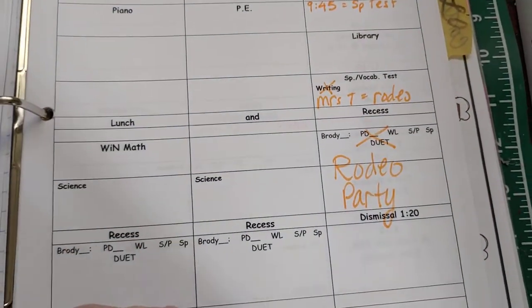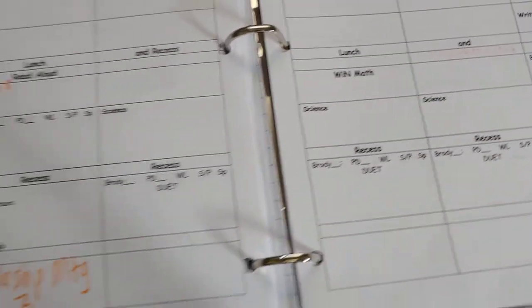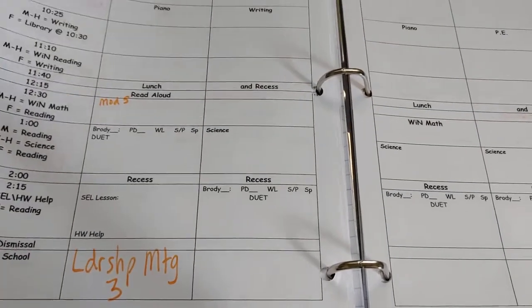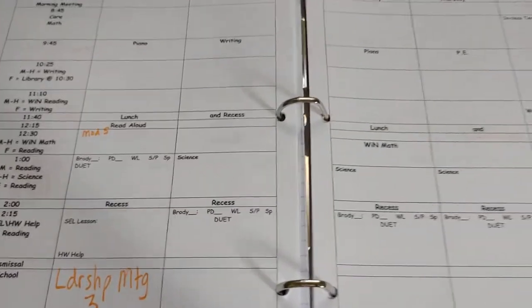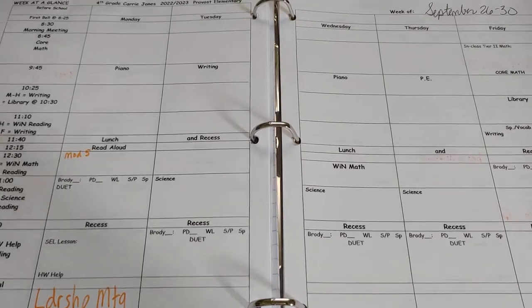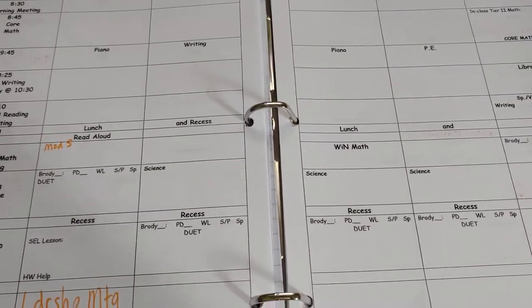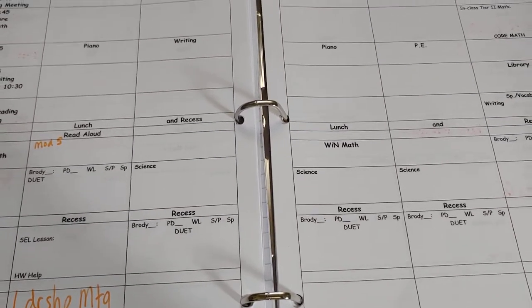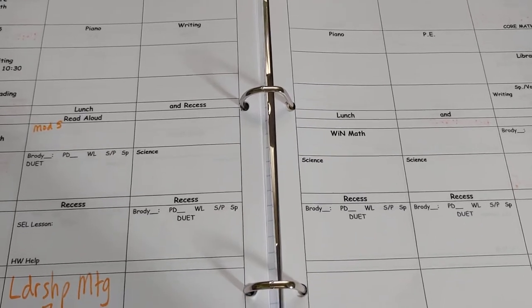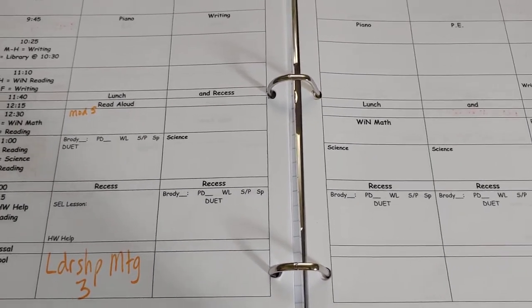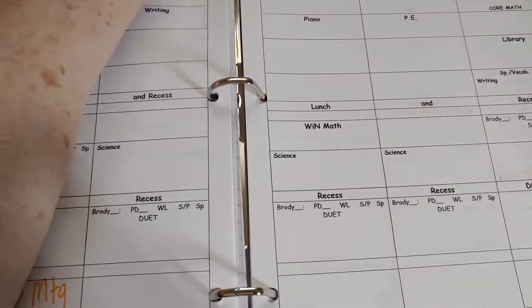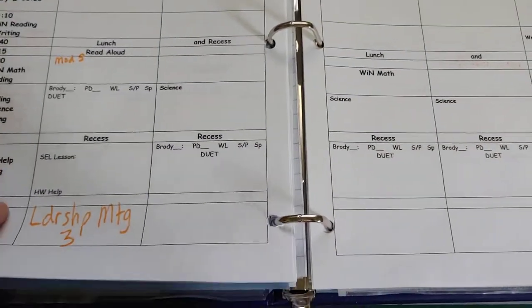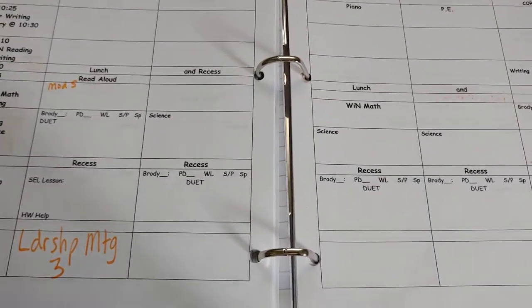We decide when we're beginning different programs, when we're giving pre-assessments or having special events in our grade level, so those all go in color. Now I used to color code them if you really want to be type A about it—I used to color code them by district, school, grade level, or personal to me—but you know who's got time for that? Let's just get one color and put all that stuff in.